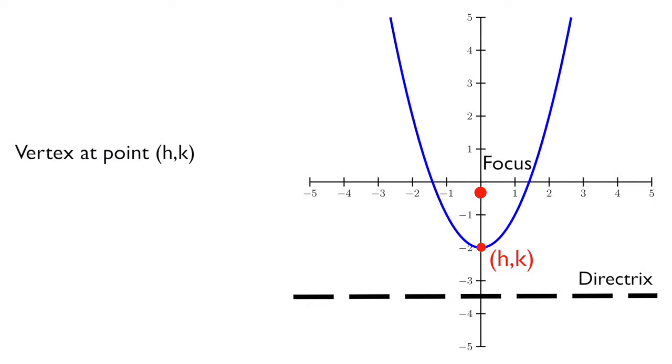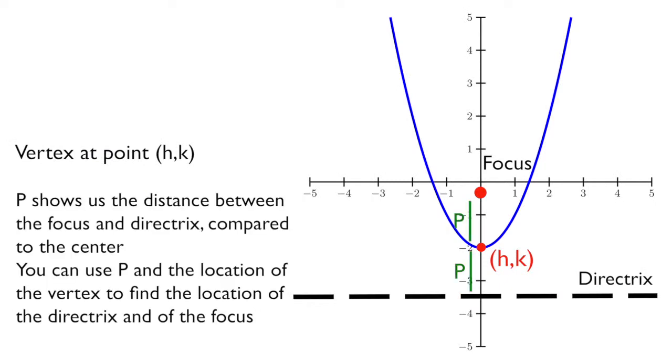The vertex is centered at the point h, k. Note that p is the distance between the focus and the directrix, as shown here.